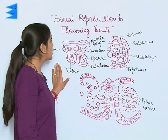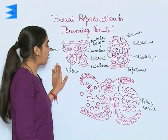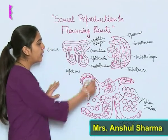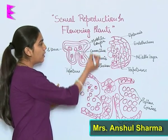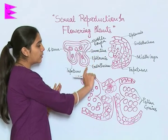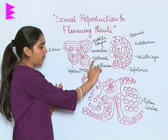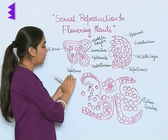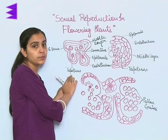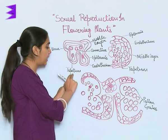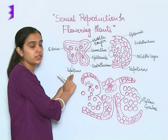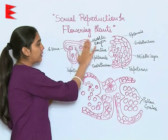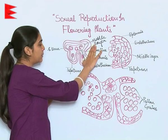This is the transverse section of microsporangium. As I mentioned, there are three major layers. The outermost is epidermis, then is endothecium, and the third one is tapetum which nourishes and helps in the development of pollen grains. Connecting these layers are the middle layers.